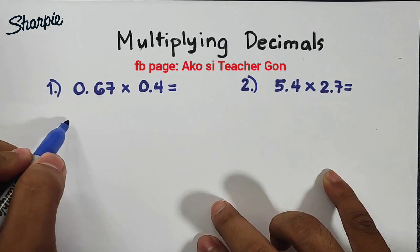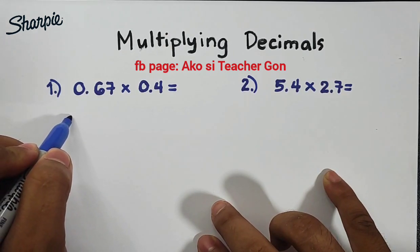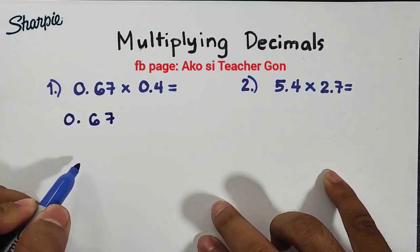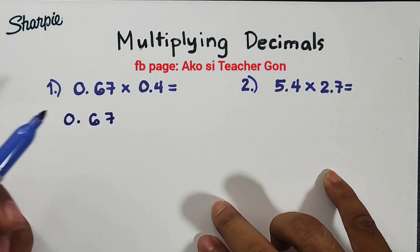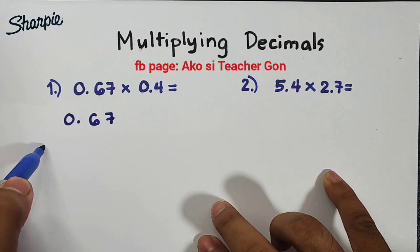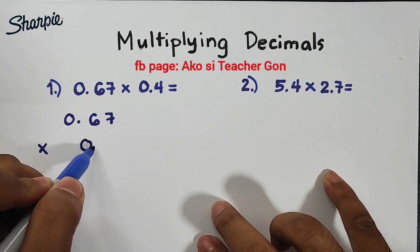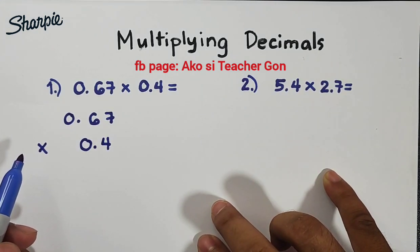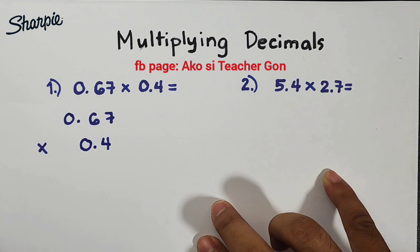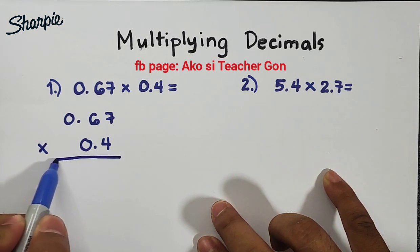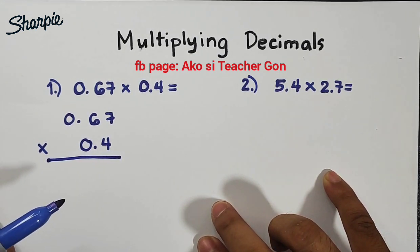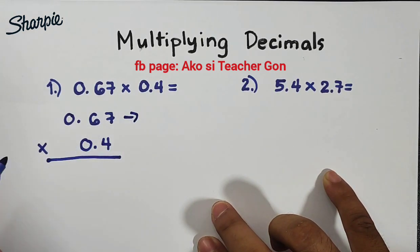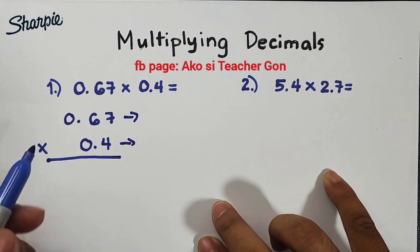We will copy the given decimals. We have 0.67, we will write them vertically times 0.4. In multiplying decimals there's no need for us to align them based on their decimal position.